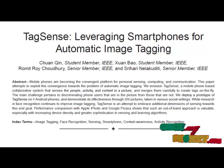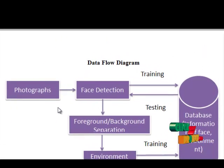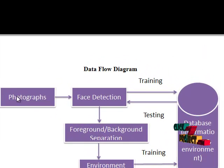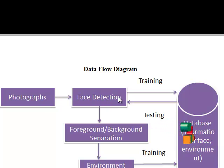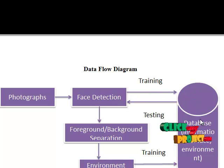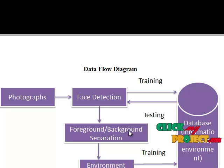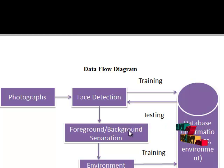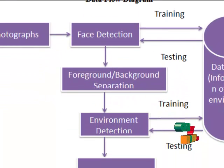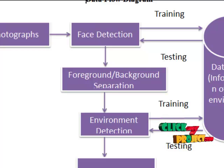Regarding the data flow diagram: initial photographs taken by the user are subjected to the Viola-Jones face detection algorithm to detect the face region alone, which is then trained and stored in the database. The same photograph is also subjected to foreground and background separation in order to determine the objects from the background, which enables determination of the environment. The detected environment is similarly trained and stored in the database.